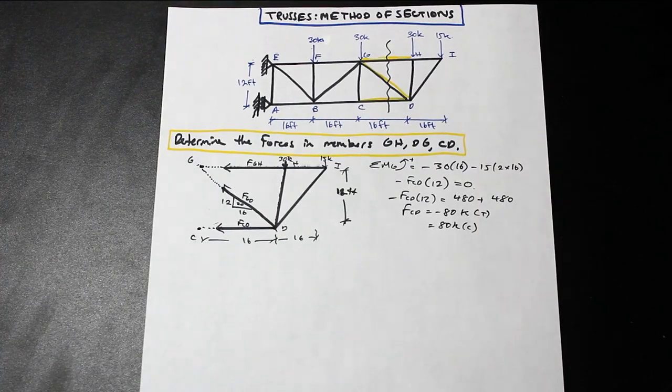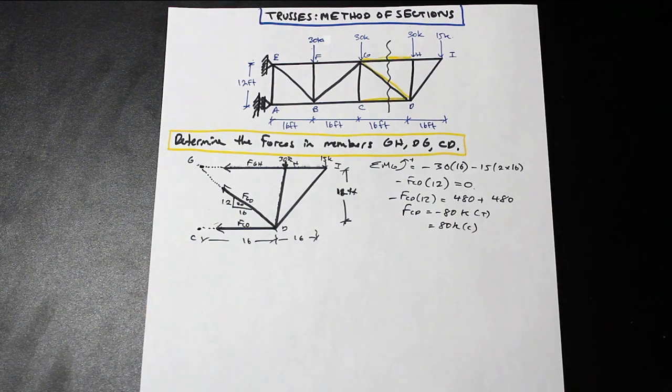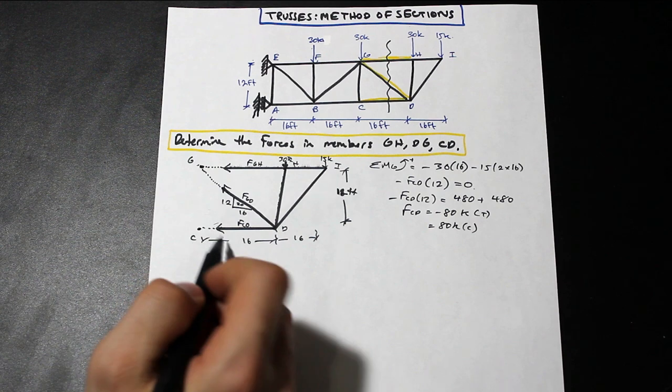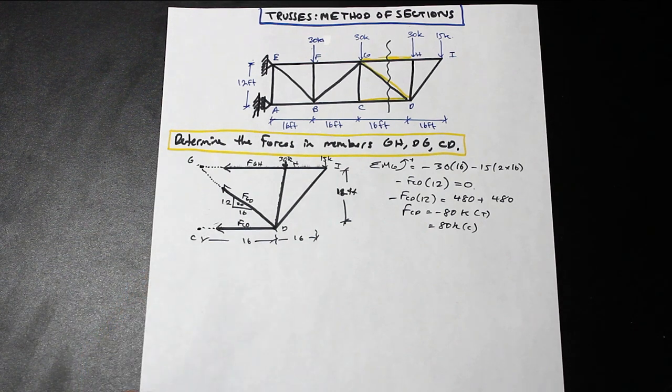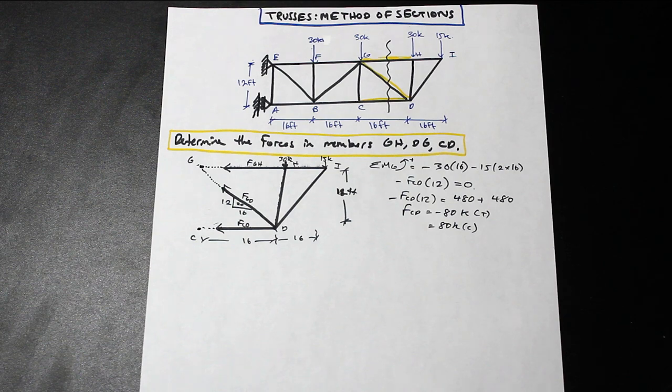So negative 80 kip tension is the same thing as 80 kip compression. So what does this mean? Well, what this means simply is that the direction that we assumed for FCD is incorrect. So if you ever get a negative value, that means that this member is not actually in tension. It's in compression. So there's two options that you can do here, and this is also where a lot of people make mistakes.